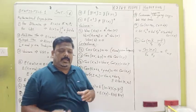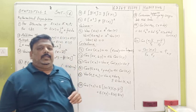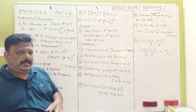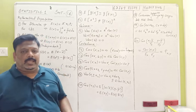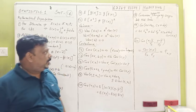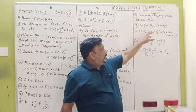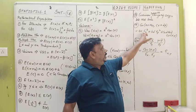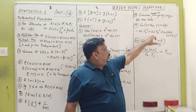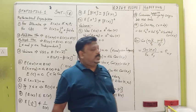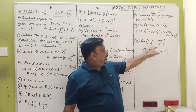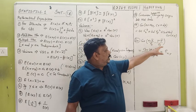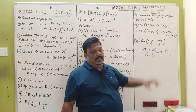The covariance is independent of change of origin but dependent on change of scale. The correlation coefficient R = Cov(X, Y) / (σ_x · σ_y). The covariance of aX + bY, cX + dY equals ac·σ_x² + bd·σ_y² + (ad + bc)·Cov(X, Y). The covariance of X/σ_x and Y/σ_y gives the correlation coefficient.